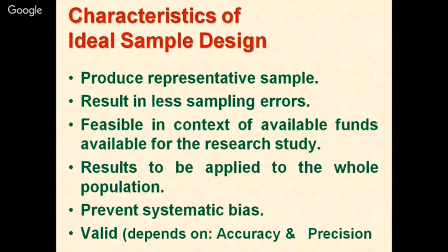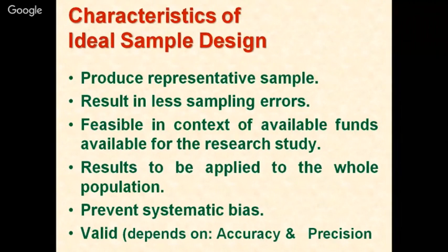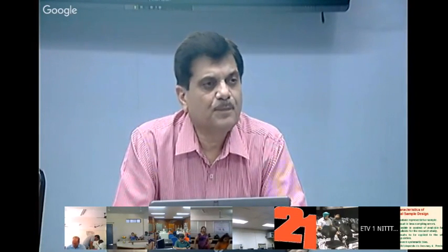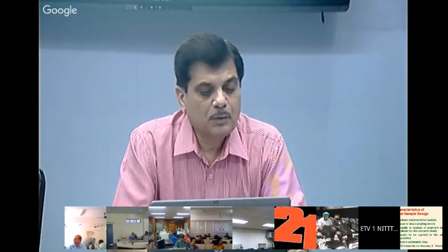The characteristics of an ideal sample design are: it must produce a representative sample, meaning every member or element of the population has an equal probability of being selected. It must result in less sampling error. It must be feasible in the context of available funds for the research study. It should produce results that can be applied to the whole population, which is only possible when the sample is representative.